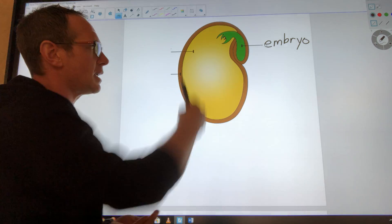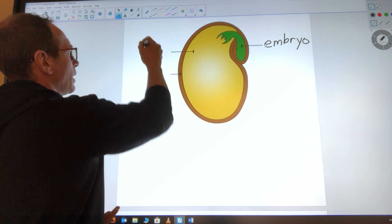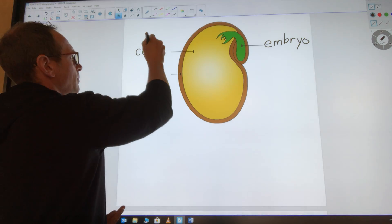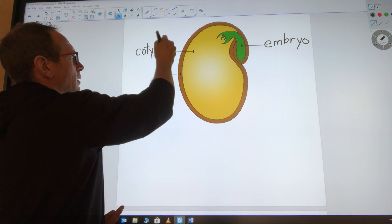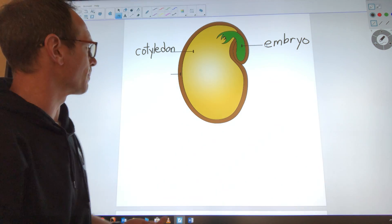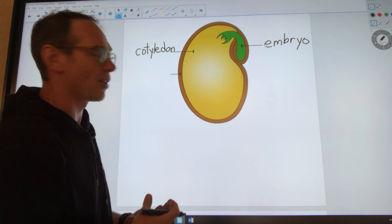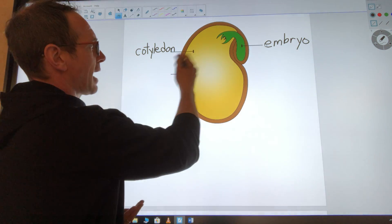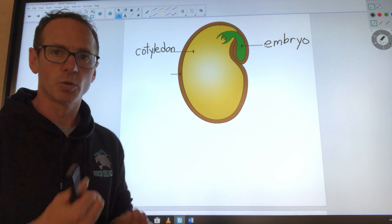Most of the seed is food for the embryo. We call that the cotyledon. Sometimes it's called an endosperm. Most people just look at it and call it the food source. That is how the embryo has some nutrition to get started.